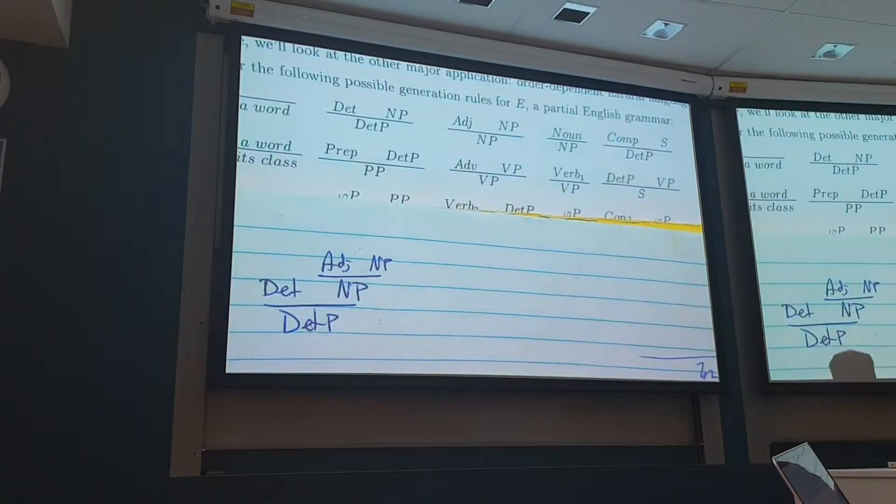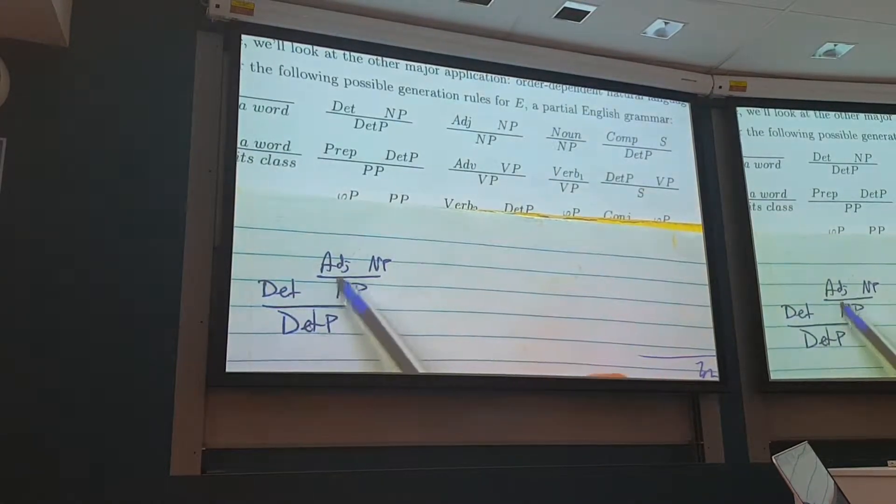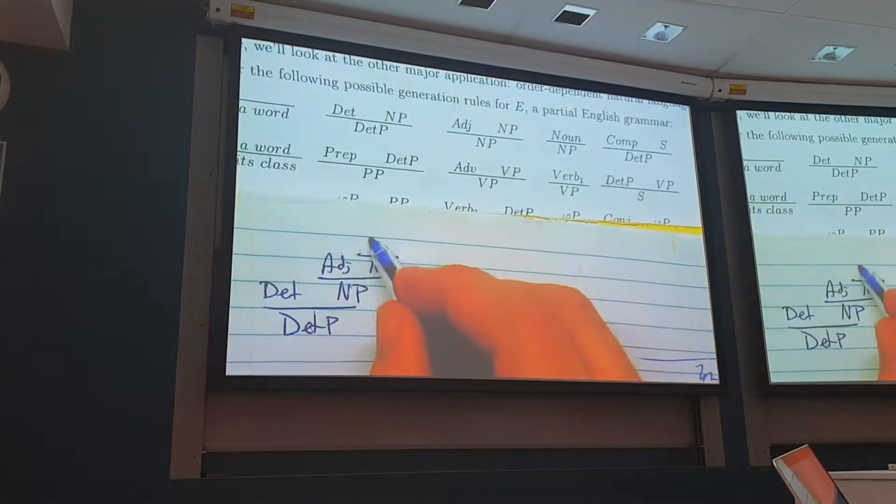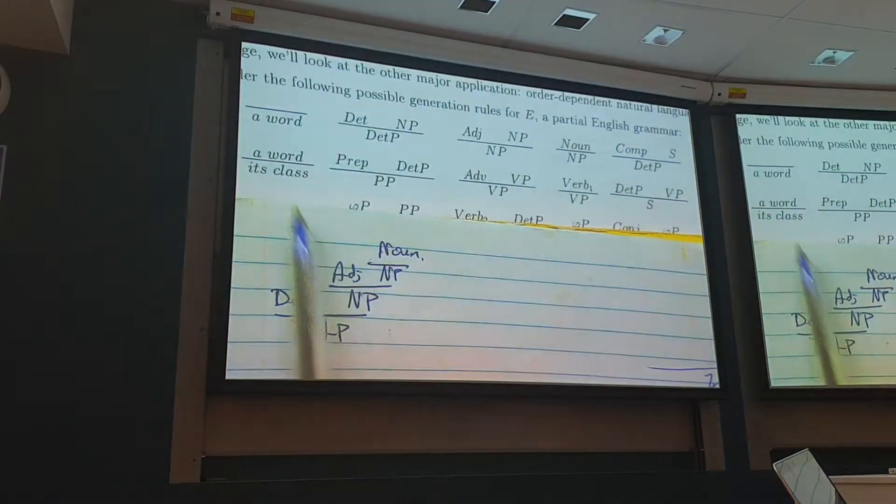And you can keep on going there forever. The big, black, fierce, scratchy, sleepy cat. Keep on adding more and more adjectives by just breaking that down. That noun phrase can also just be a noun. And now we use this useful rule here.